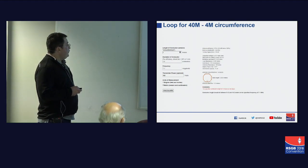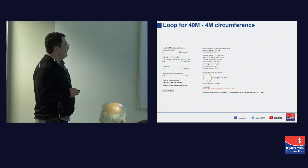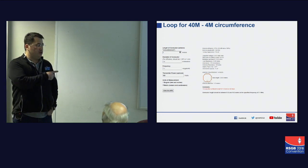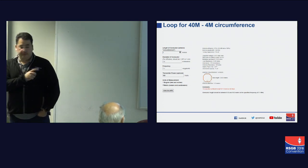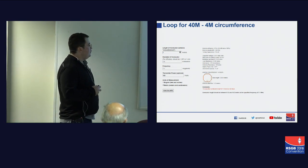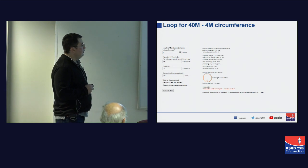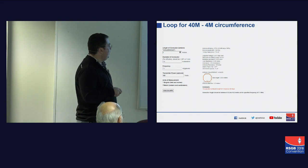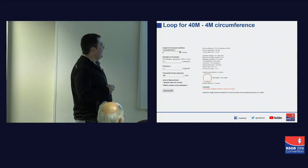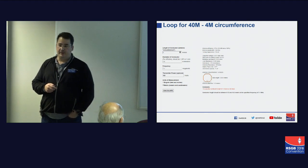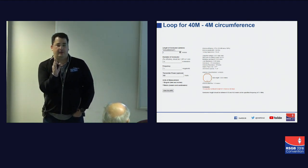If I take a loop for 40 meters based on a 4-meter circumference — so this is one-tenth of a wavelength as opposed to a quarter of a wavelength in the previous slide — the numbers change significantly. The antenna efficiency drops to about 31% — 5 dB below an isotropic antenna. The antenna bandwidth drops to 4.5 kHz. That's great for digital modes and CW, just okay for voice — make sure you're tuned.